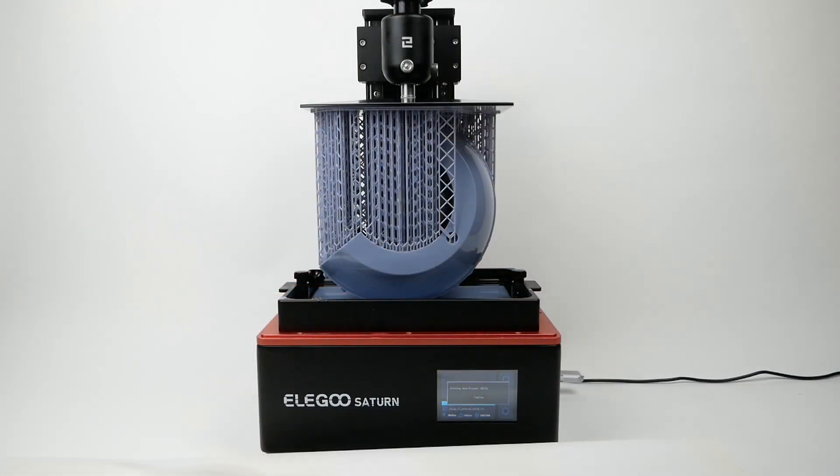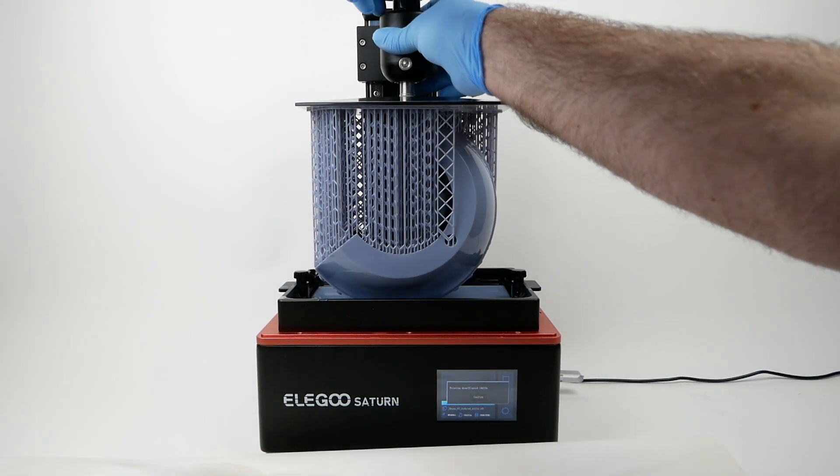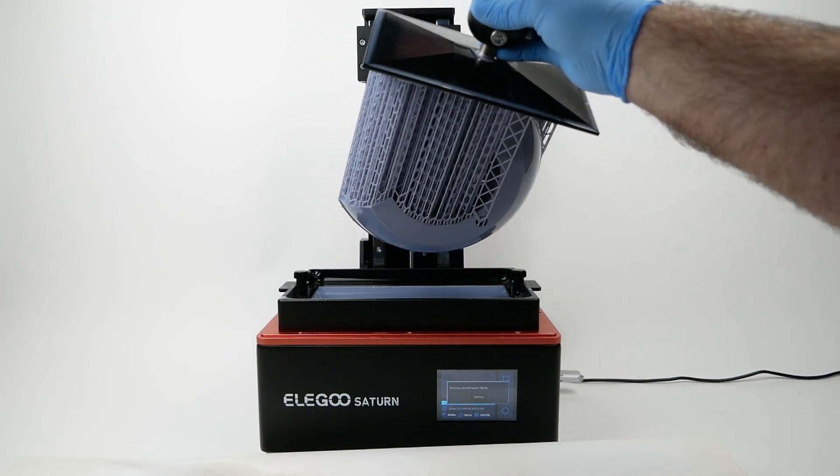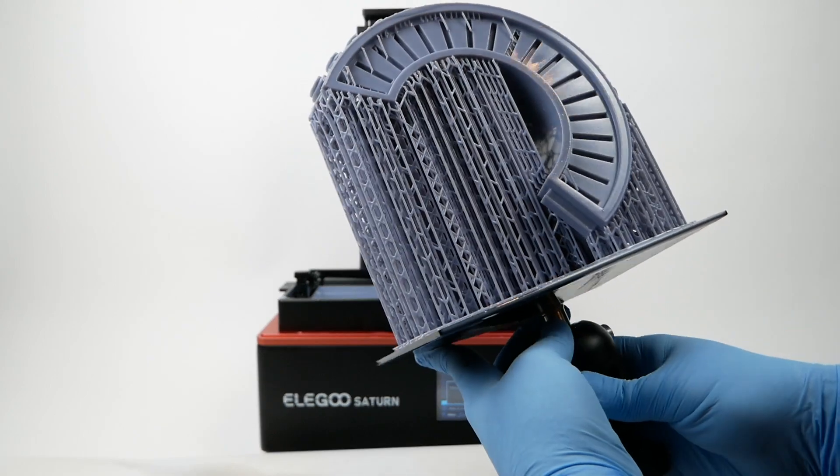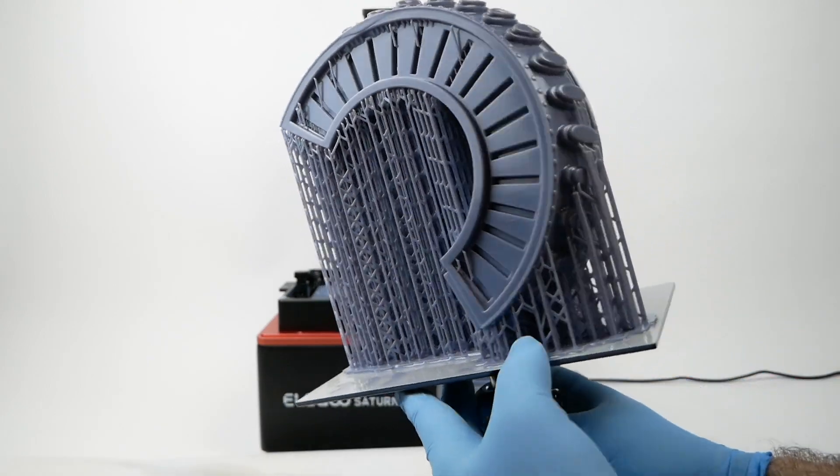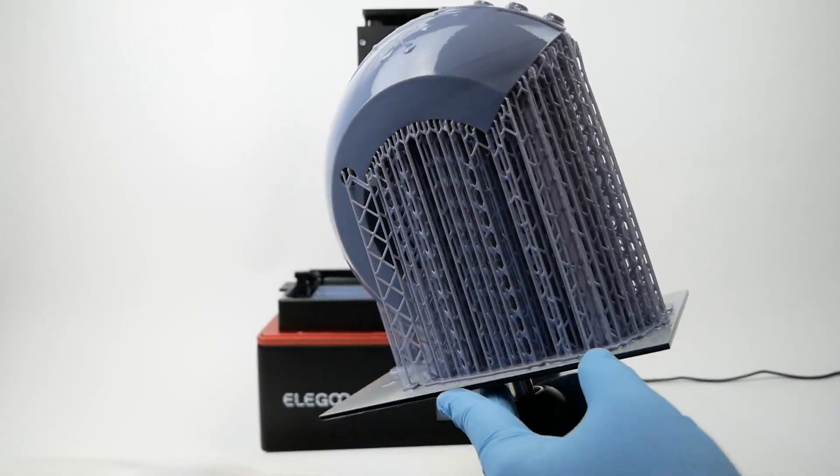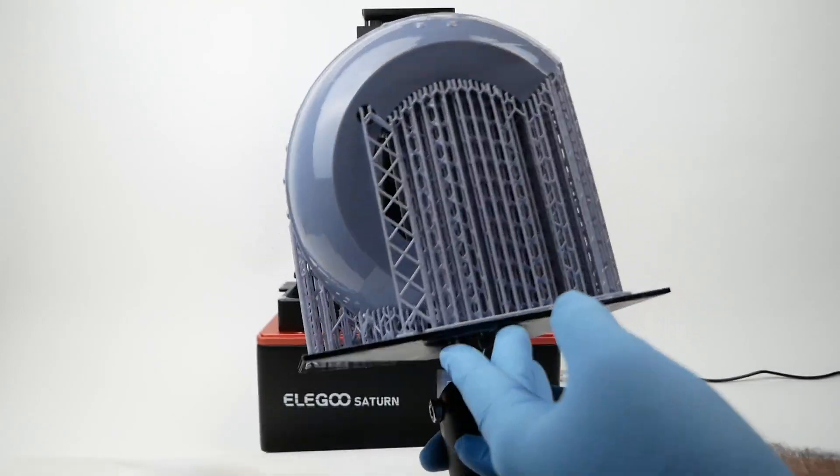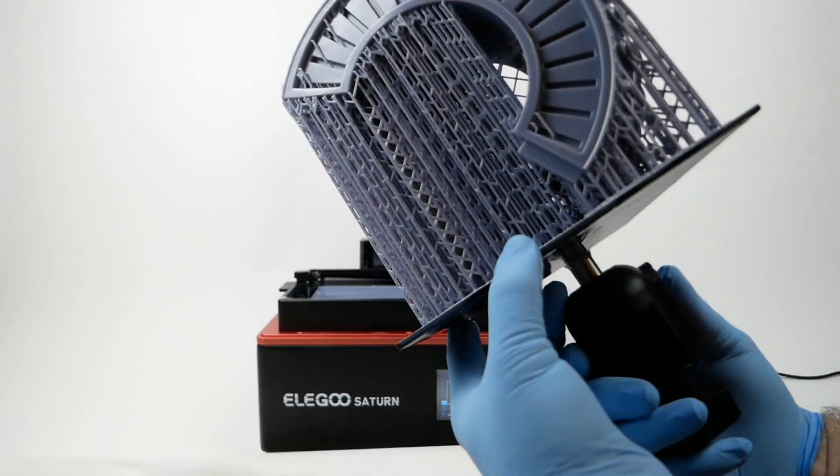And indeed it has been very convenient to be able to print very large objects at once without having to cut them up into different pieces or anything like that. This is the piece I showed you earlier, the section of Max Rebo's organ, and there's just no way you could do this very well on a smaller printer like the regular Elegoo Mars. You'd have to do it in many pieces, and there's a good chance that they wouldn't fit together properly.